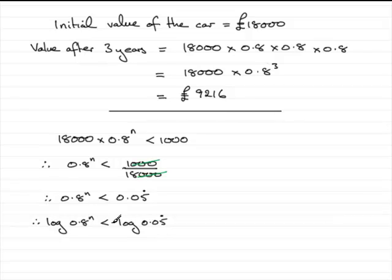Now we can use the power rule for logs, where the power comes out to the front. This becomes n·log(0.8) < log(0.05 recurring).